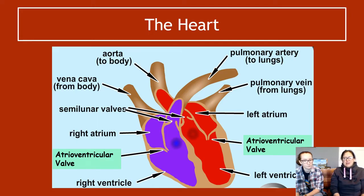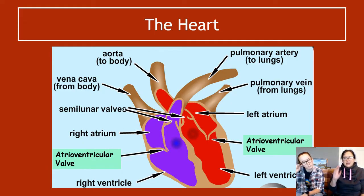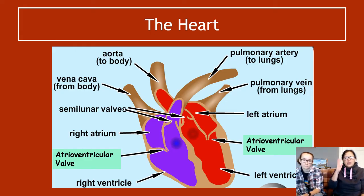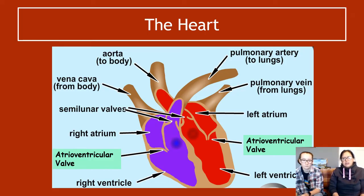There are two new things on this diagram. The first new thing is the names of the valves. The valves that run between the atria and the ventricles are called atrioventricular valves, or AV valves. It's easier to just learn AV valves.